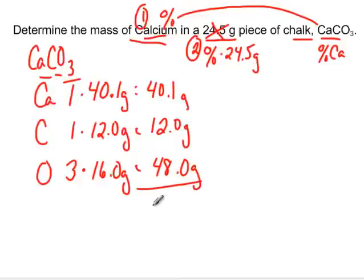If we add all of this up, we come up with a molar mass of 100.1 grams. This is our total. So if we had one mole of calcium carbonate, it would have a mass of 100.1 grams.